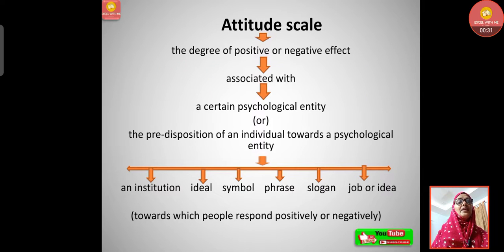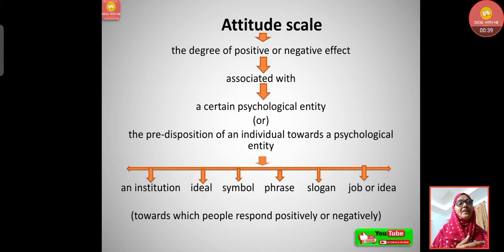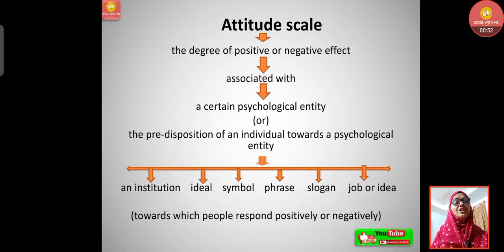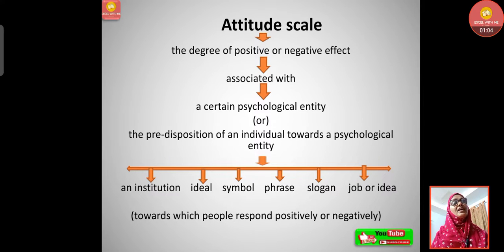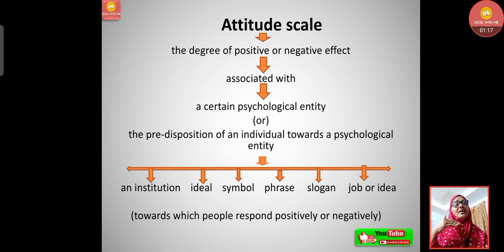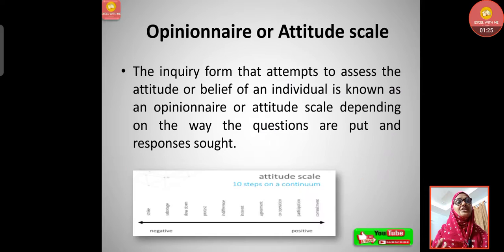What is attitude scale? It is the degree of positive or negative effect associated with a certain psychological entity, or the predisposition of an individual towards a psychological entity — towards maybe an institution, ideal, symbol, phrase, slogan, job, or idea — towards which people respond positively or negatively. Whatever question we ask to the individual, we seek their opinion or perspective, which could be positive or negative related to any psychological entity.